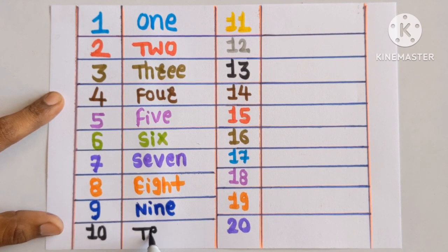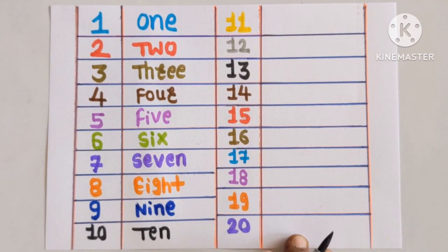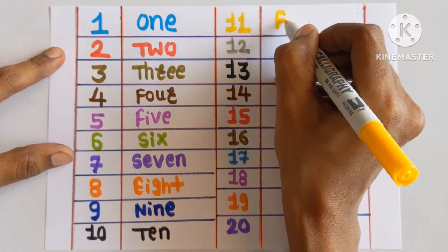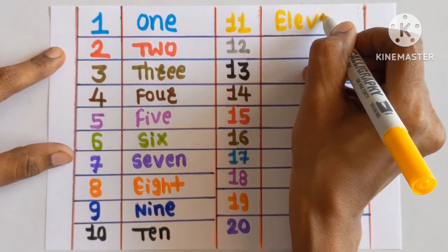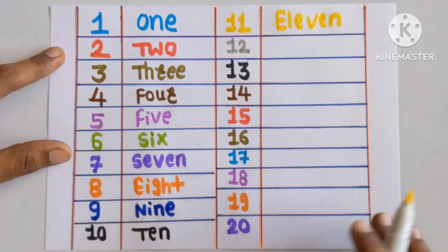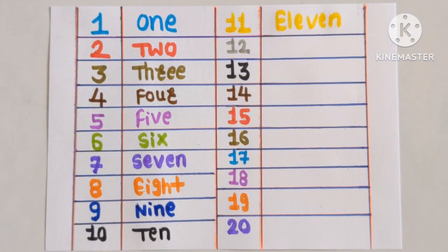Number 10. Ten. Black color. Number 11: E-L-E-V-E-N. Eleven. With a yellow color.